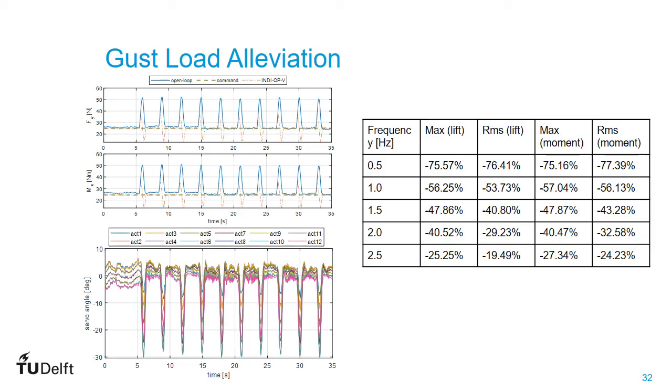Here, I would like to show you the result of the gust load alleviation control. In the experiment, we have introduced sequences of gusts hitting the wing on top of a freestream velocity of 15 meters per second. The task of the controller was to minimize the root bending moment, the middle plot, and the force in the y-direction, the top plot, while keeping the drag minimal. The gust sequences were followed by short intervals corresponding to the blue peaks you see on the top plot. The blue shows the open-loop response and the orange shows the INDI control approach together with the quadratic programming, which was responsible for the allocation of these multiple actuators.